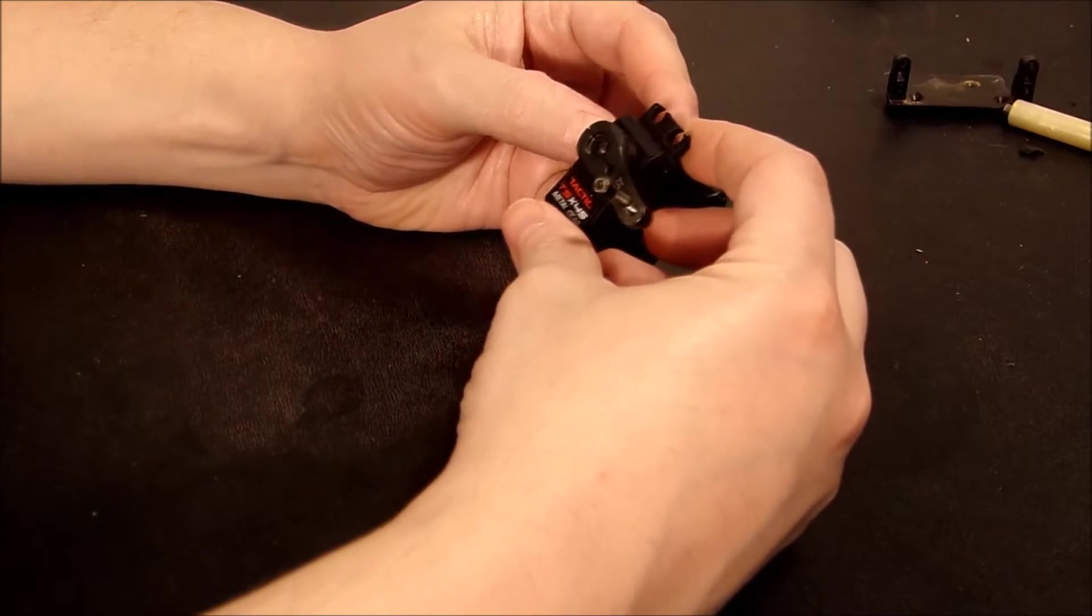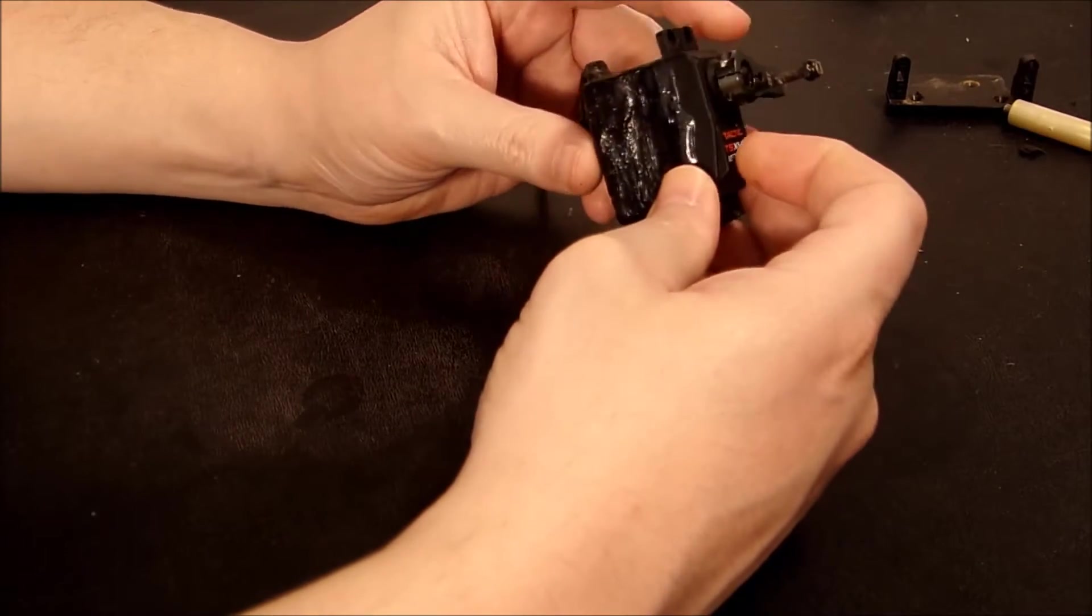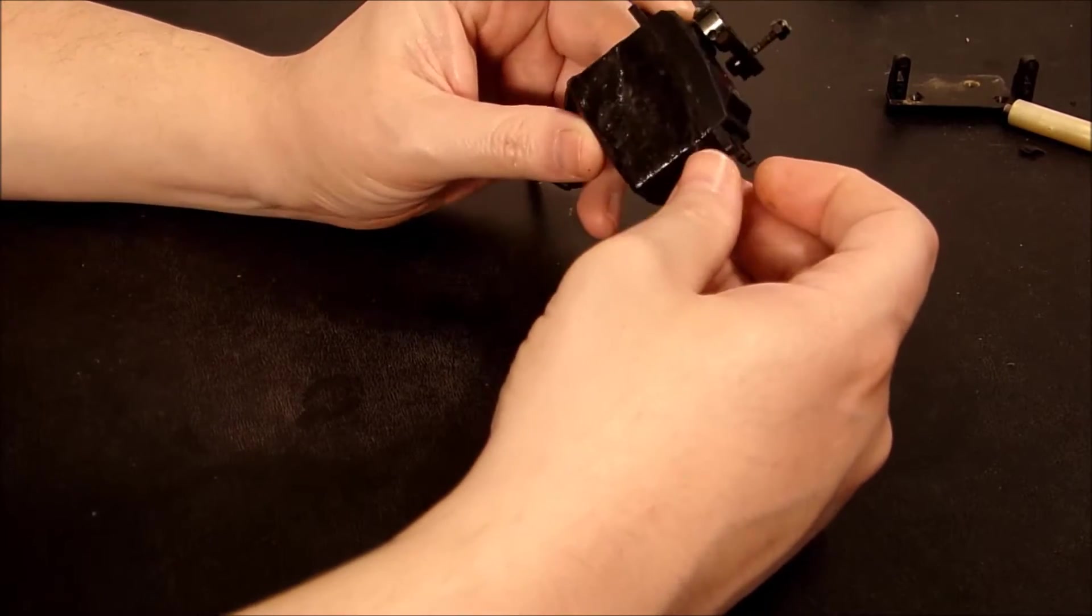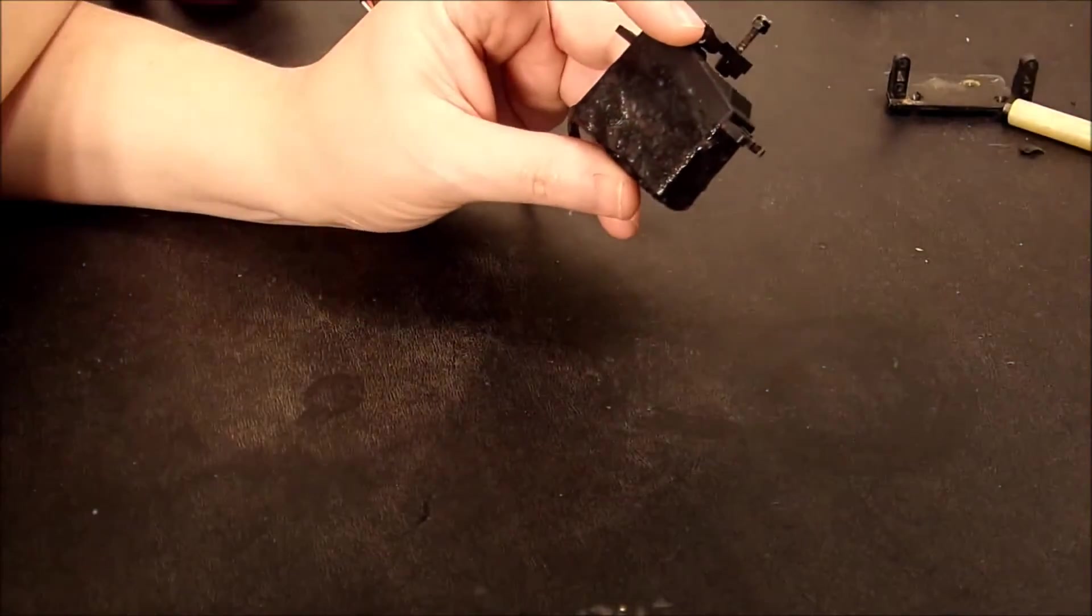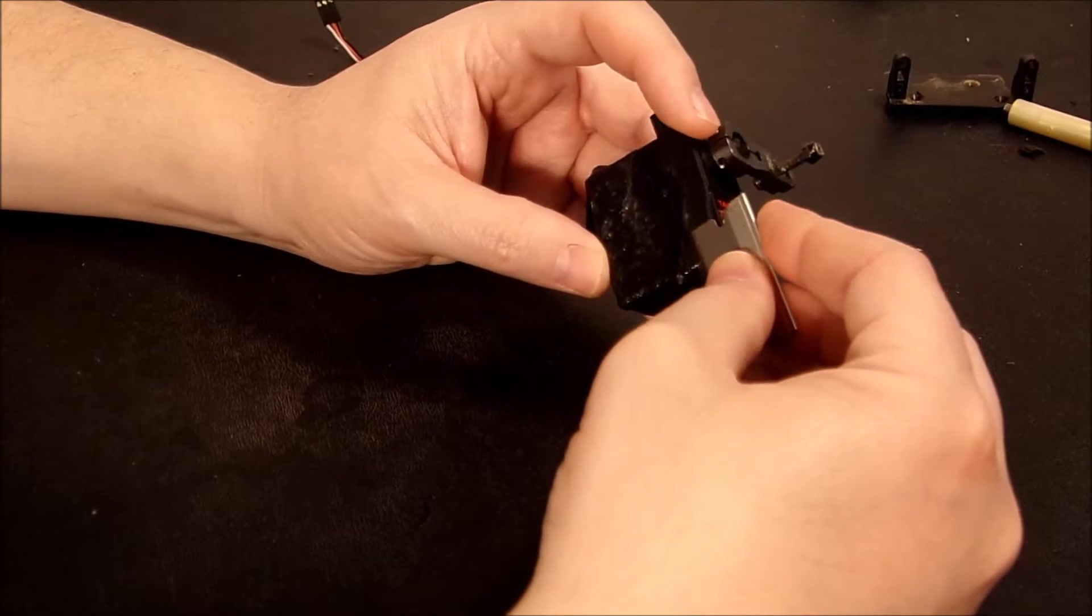You've seen other videos where I say I like liquid electrical tape. This is another case where I've waterproofed this servo and then I've covered the outside in liquid electrical tape to seal the cracks. Once again it's just a case of all we got to do is peel it off. This is why I love it.